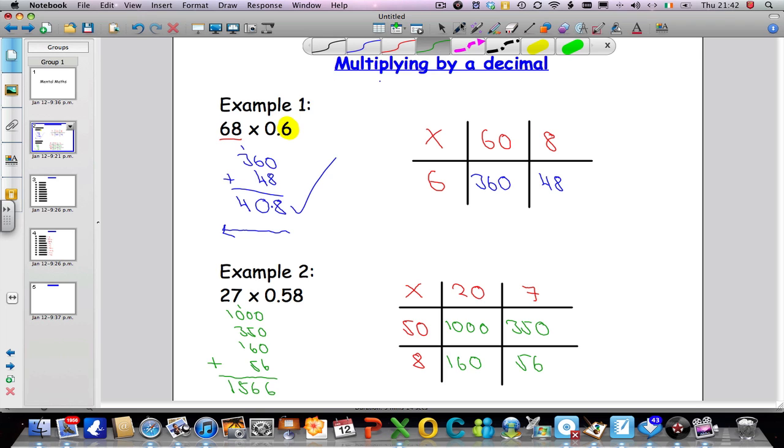So, again, count the number of decimal places that were in the question. In this case, we had 2 decimal places, the 5 and the 8. 2 decimal places, 1, 2.